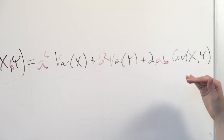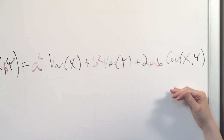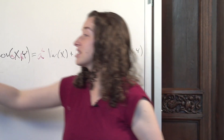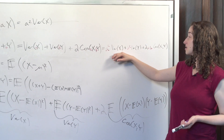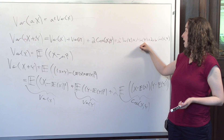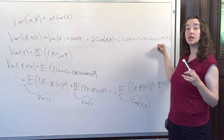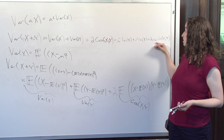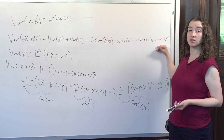This is the equivalent of the linearity of expectation, but for variance — it turns out it's not quite linear. The variance of ax plus by is equal to a squared times the variance of x plus b squared times the variance of y, and crucially, if x and y are not independent — in other words, if their correlation is not zero — we also need the term 2ab times the covariance of x and y.